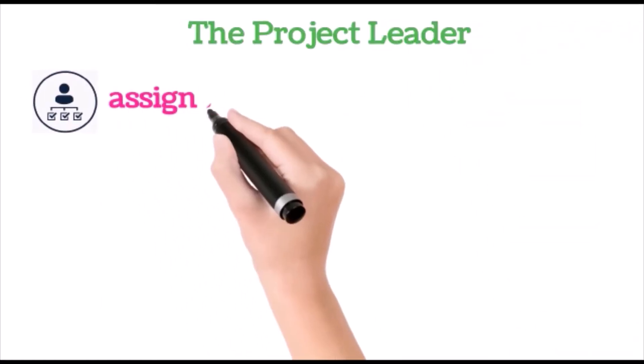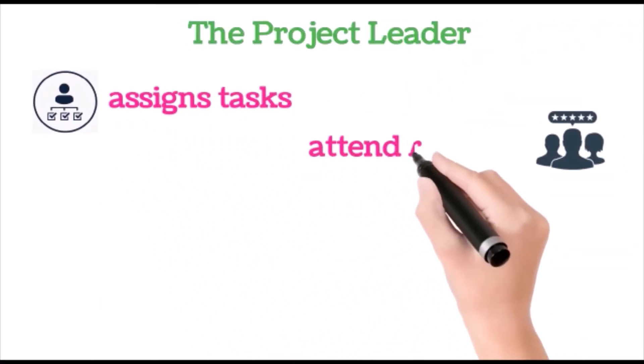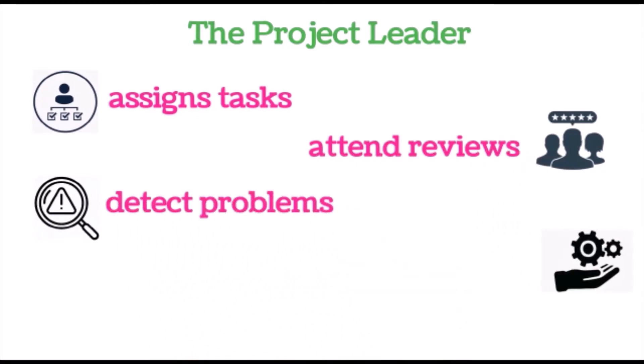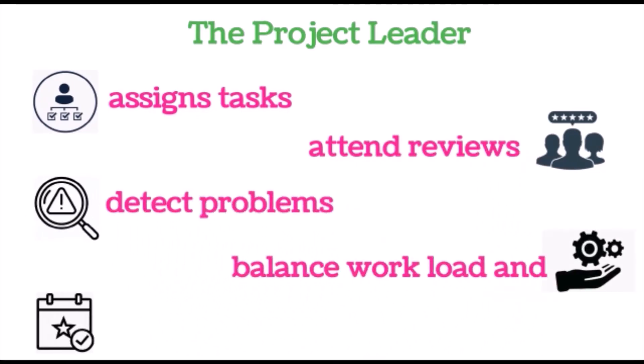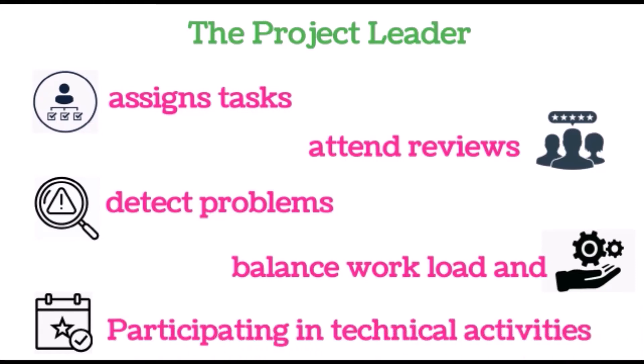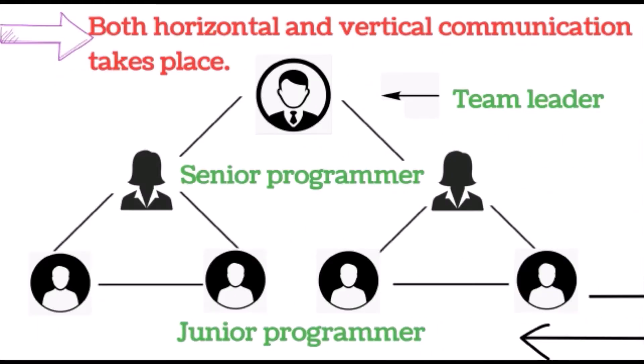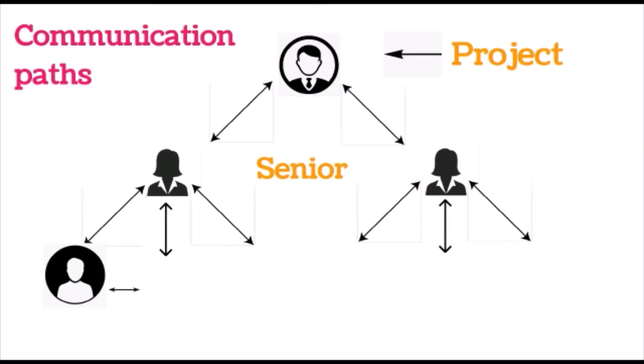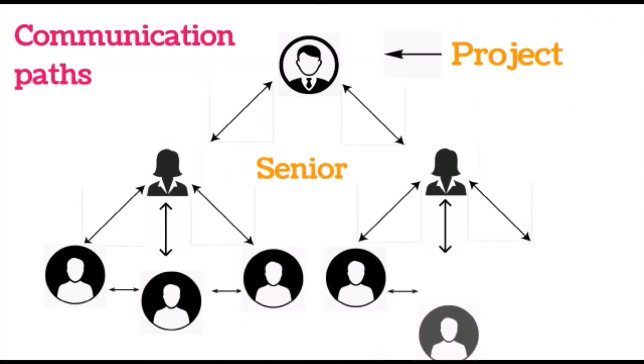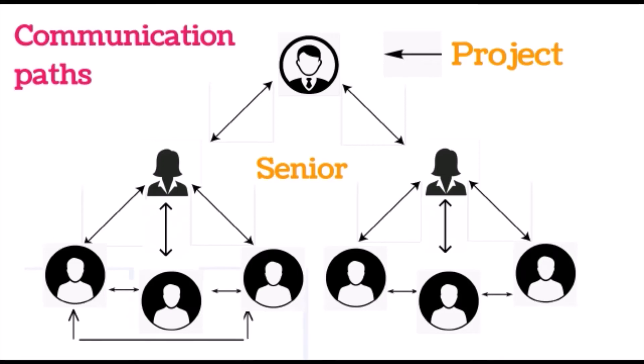The project leader assigns tasks, attends reviews, detects problems, balances workload, and participates in technical activities. Here senior programmers work under a team leader and junior programmers work under senior programmers. It requires both horizontal and vertical communications.